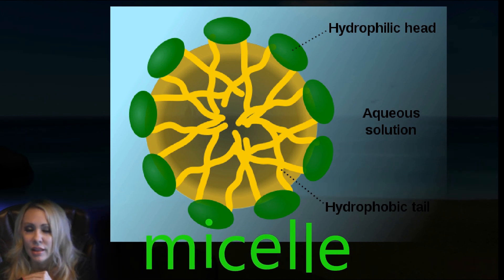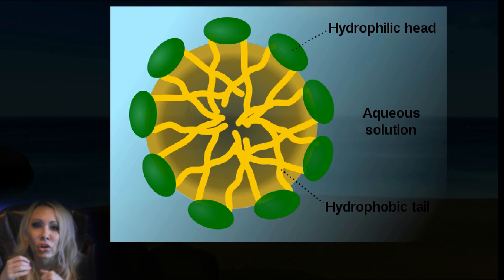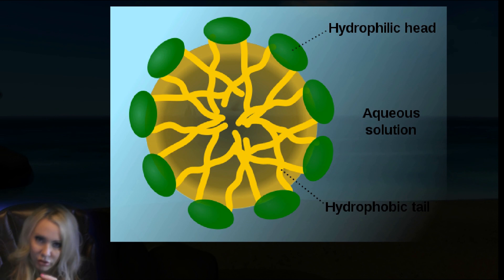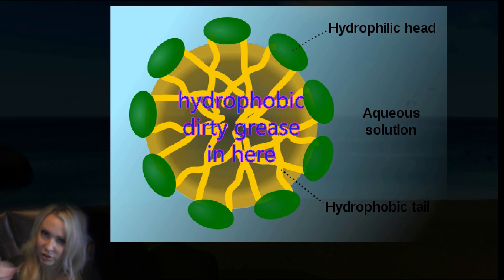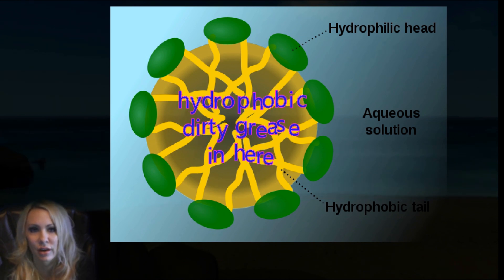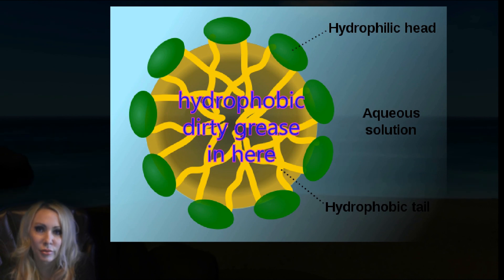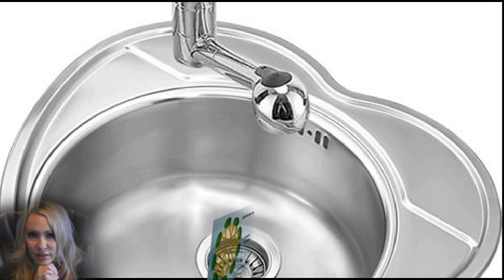Let's look at a micelle. This is going to be the basis for soaps and detergents. How they work is you put soap on your hands when you have dirty grease, and you rub them. What you're doing is encouraging the grease to get into the middle of these micelles, where the hydrophobic chamber is on the inside — because hydrophobic likes hydrophobic. Then the hydrophilic heads, surrounded by water, carry the grease away down the drain. It takes the insoluble grease from your hands and washes it away. That's a micelle — a little ball of amphipathic molecules.